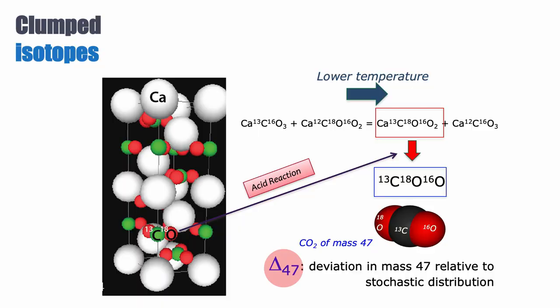Now we measure the abundance of that mass 47 because we know that if you look at the deviation between the proportion of C13 and O18 in your mineral and a completely random distribution, a stochastic distribution of those isotopologues, that difference, known as CAP 47 or big delta, we call this CAP, is proportional to the temperature of formation of the mineral.